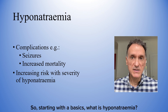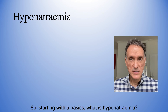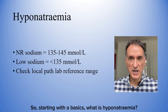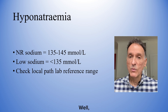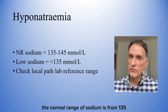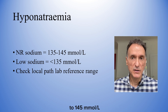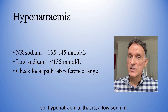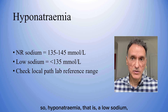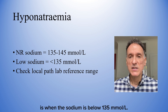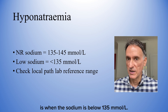Starting with the basics: what is hyponatremia? The normal range of sodium is from 135 to 145 mmol per litre. So hyponatremia — that is a low sodium — is when the sodium is below 135.